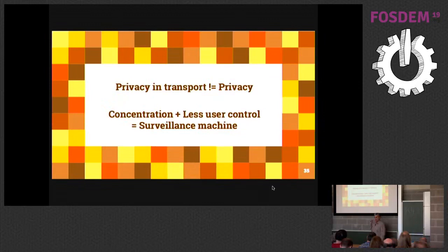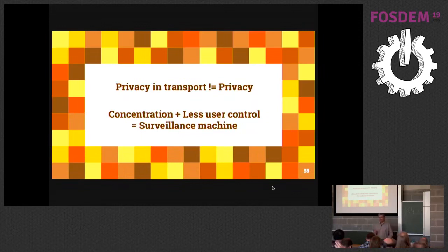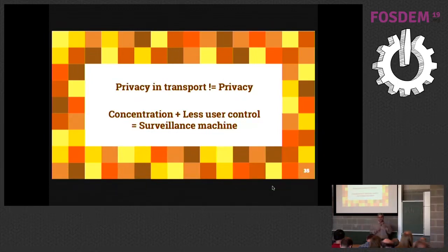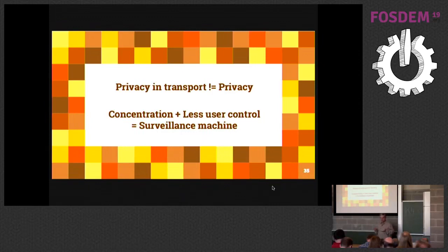There are two main points I want to make. First, privacy in transport — which is what DoH provides — is not privacy overall. When DoH proponents tell you this gives you more privacy, yes to a certain extent, but in the overall I think it's actually giving you less privacy. The other point is that if you combine concentration with reduction in user control, you really get a potential surveillance machine. I'm sure the intentions of the people who designed this were not to build a surveillance machine. But if most of the world's DNS goes into a reduced number of systems and companies, it becomes easy for security agencies to show up at the door and ask for DNS traffic from the entire world.